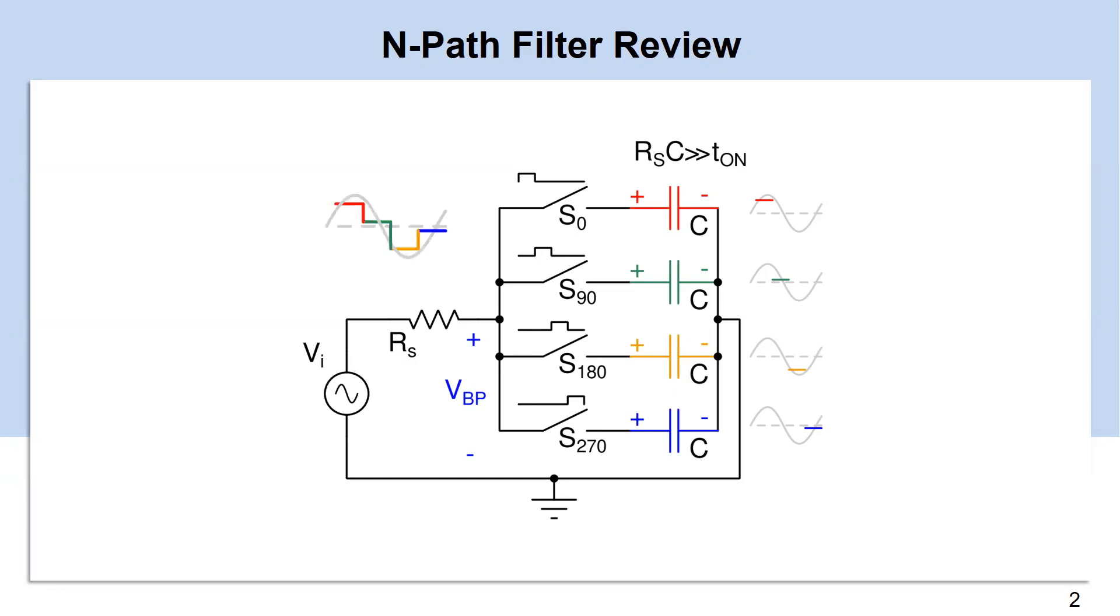Since each capacitor sees a distinct part of input, the output RF voltage shows a staircase waveform.